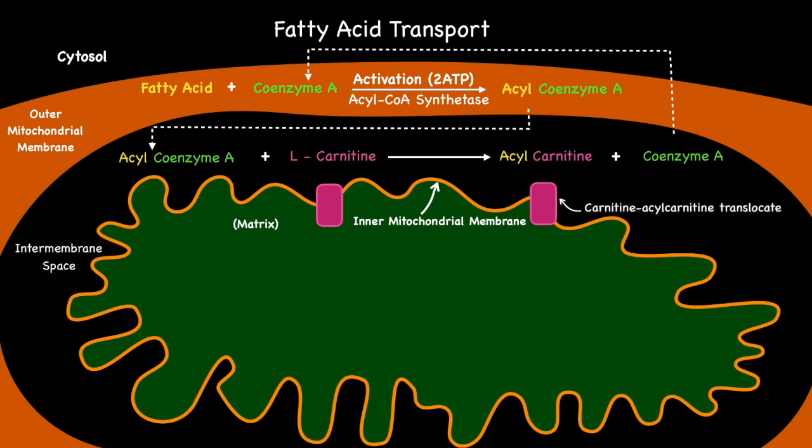Carnitine acyl carnitine translocase is responsible for transporting the acyl carnitine across the inner mitochondrial membrane. Once in the matrix, carnitine offloads its acyl passenger and then shuttles back into the intermembrane space, using the same transport protein to repeat the process again.